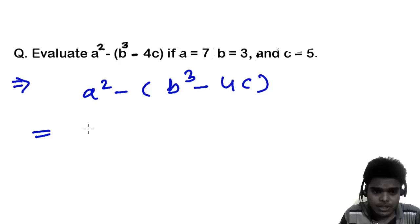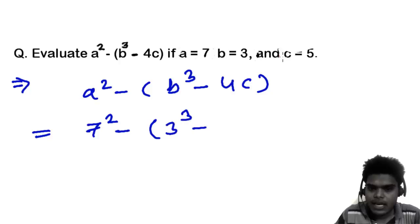So let's put these values first. A equals to 7 so first let me write 7 square minus inside the bracket, b equals to 3 so I'm gonna write 3 cube, and then c equals to 5 so 4 times 5, right.